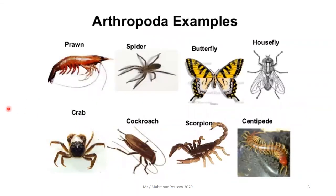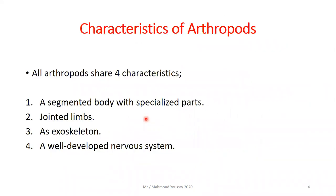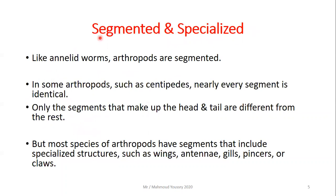Here are some examples of arthropods: the prawn or shrimp, spiders, butterflies, the housefly, crab, cockroaches, scorpions, and centipedes. All arthropods share four characteristics: number one, a segmented body with specialized parts; number two, jointed limbs; number three, an exoskeleton; and number four, a well-developed nervous system.